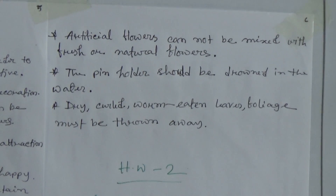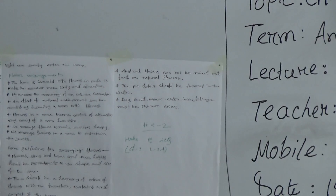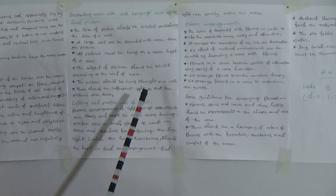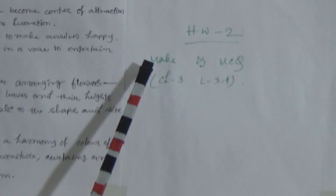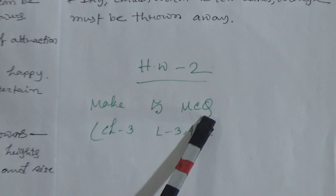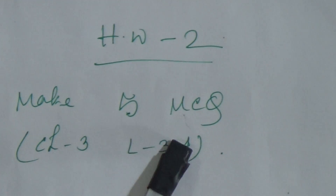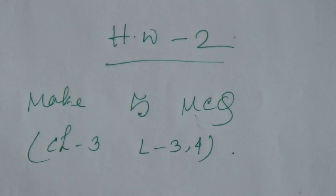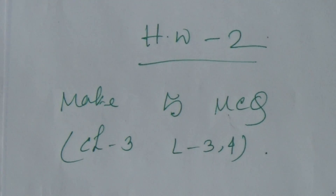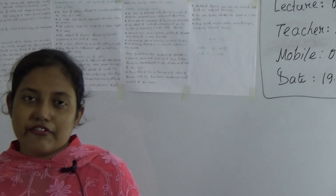These are the important points from Lesson 3 and 4. Your homework number 2 is to make 5 MCQs from Chapter 3, Lesson 3 and 4. That's all for today. See you. Allah peace.